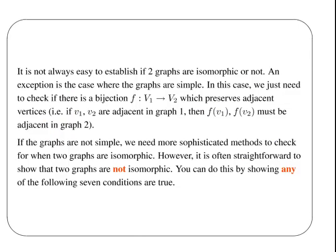It's not always easy to establish if two graphs are isomorphic or not. An exception to this case is the cases where graphs are simple. In this case, we need to check if there is a bijection, a rule that links the vertices of one graph to another, which preserves adjacent vertices. If the graphs are not simple, we need more sophisticated methods to check if they are isomorphic or not. However, it is often straightforward to show that they are not isomorphic. You can do this by showing if any of the following seven conditions are true.